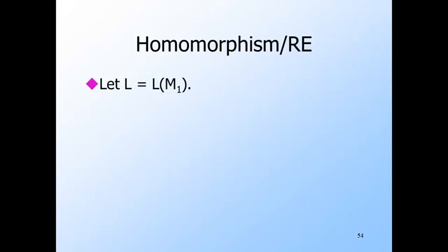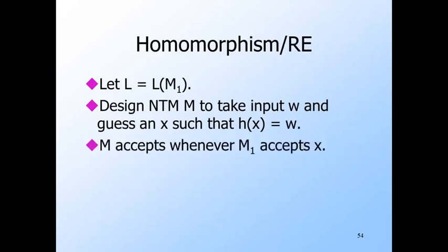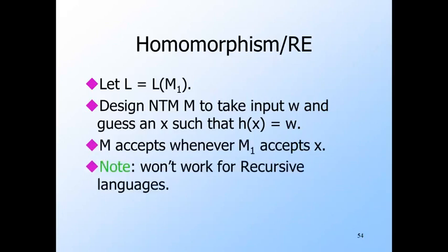Finally, let's show that the recursively enumerable languages are closed under homomorphism. Suppose L has Turing machine M1. We construct a non-deterministic Turing machine M for H(L). Given input W, M guesses a string X and checks that H(X) = W. If so, M simulates M1 on input X. If M1 accepts X, then M accepts W. Thus M accepts H(L). This construction won't work for the recursive languages: if H maps some symbols to epsilon, the string X that M1 accepts may be arbitrarily long, and M may have to simulate an infinite number of possible X's — it can never be sure there is no X in L for which H(X) equals W.